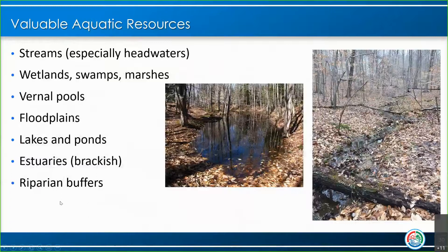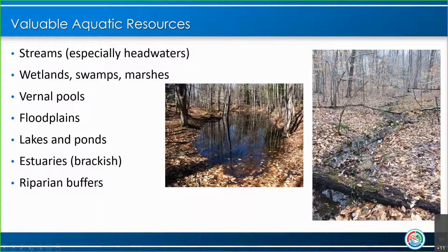Just to quickly touch on some valuable aquatic resources: streams and especially headwaters — this picture would be considered a headwater stream starting at a small spring — and vernal pools, which are seasonal pools that are really important in the springtime when amphibians are laying their eggs. Floodplains are important — as we said, they allow water to come out and dissipate energy. Lakes and ponds, estuaries — which is what the Chesapeake Bay is — and riparian buffers, which we're going to go into.